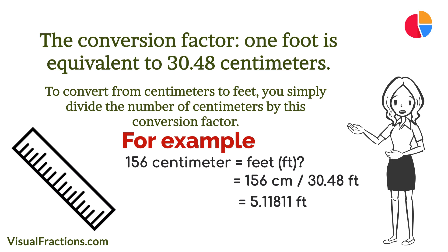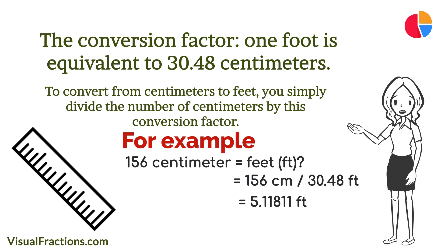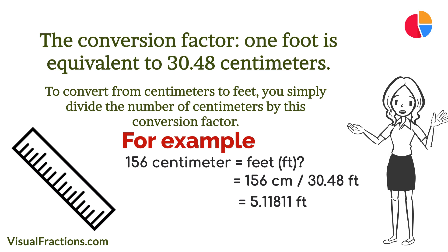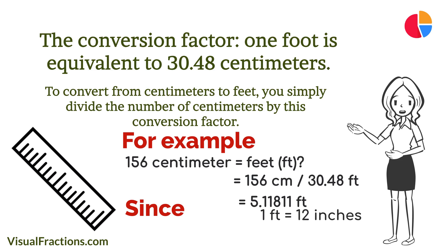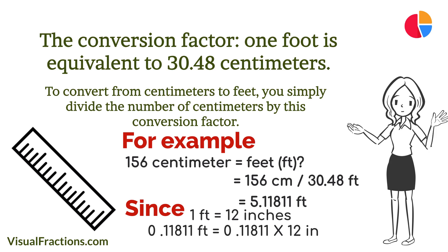The result is approximately 5.11811 feet. To break this down into feet and inches, we'll separate the whole number from the decimal. The number five signifies the full feet, while the remaining decimal 0.11811 indicates a fraction of a foot. Since one foot contains 12 inches, we'll convert the fractional part into inches by multiplying it by 12.